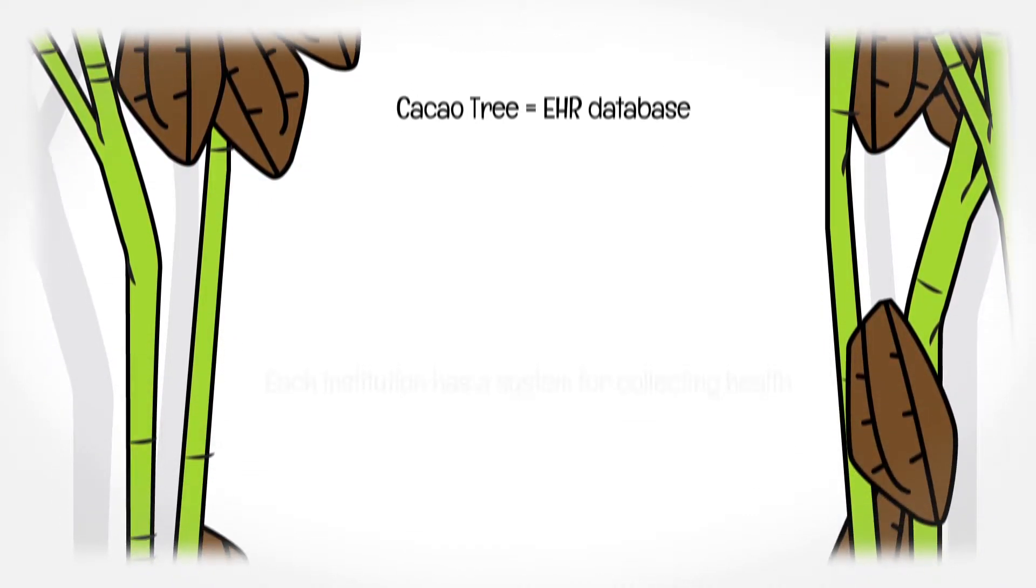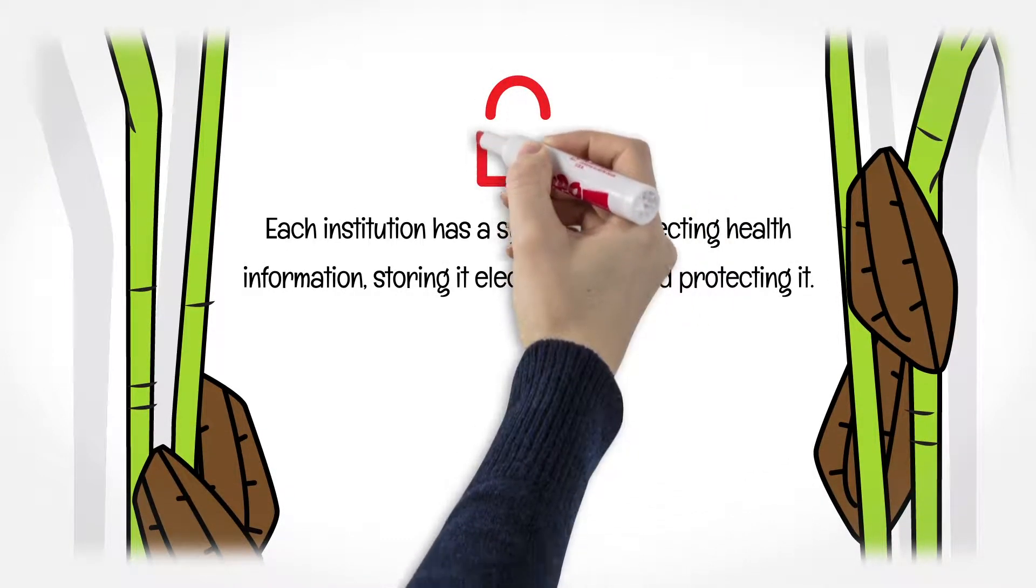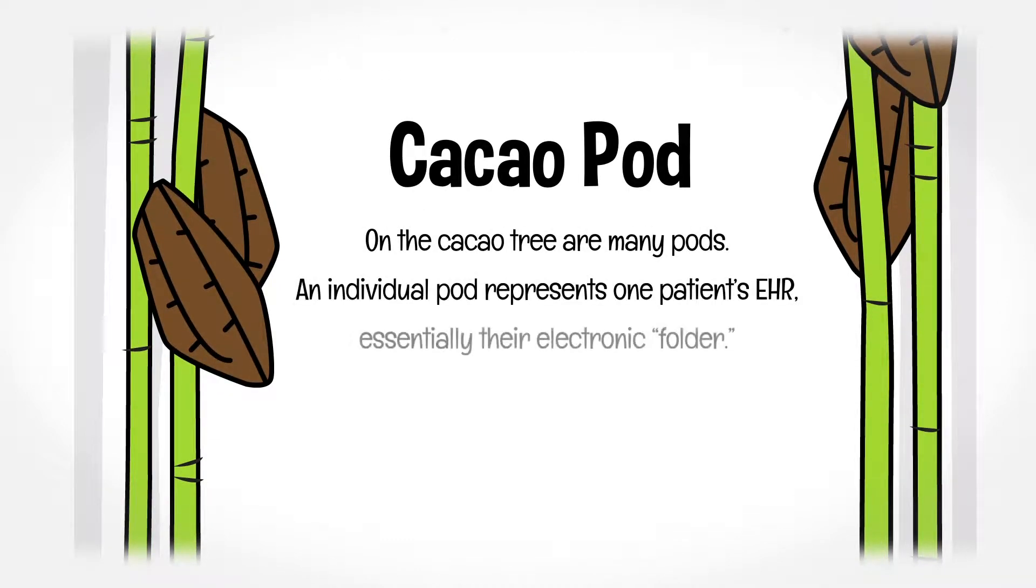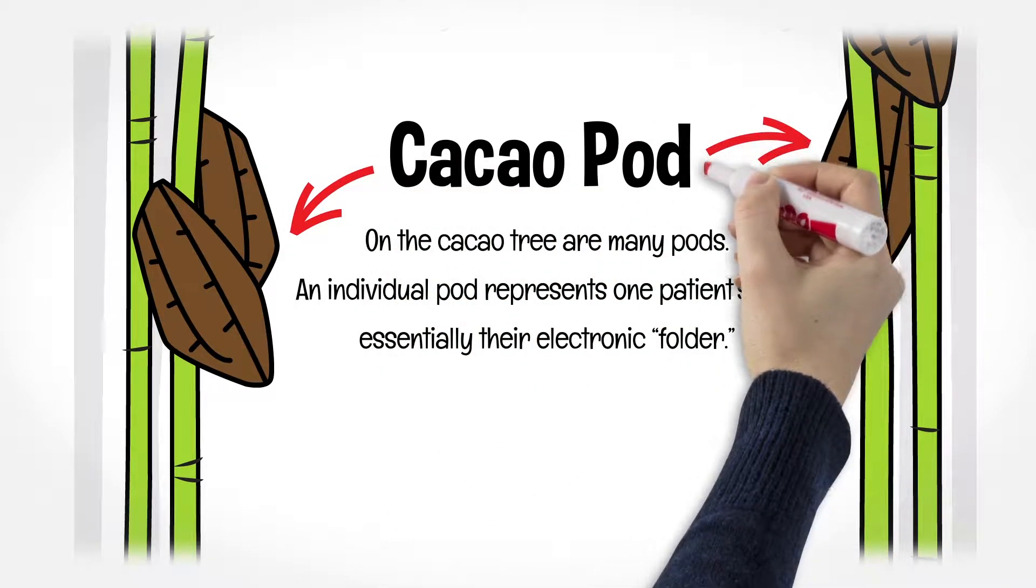Each institution has a system for collecting health information, storing it electronically, and protecting it. On the cacao tree are many pods. An individual pod represents one patient's EHR, essentially their electronic folder.